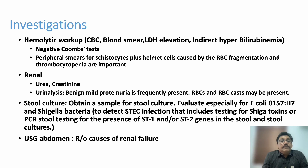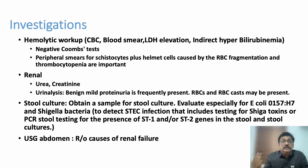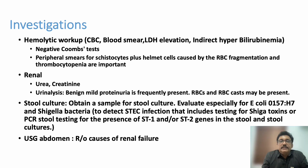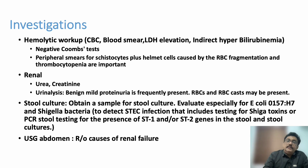Urea and creatinine can be elevated in patients with renal involvement. Urine analysis shows proteinuria, RBCs, and RBC casts. Stool culture should be done to evaluate for E. coli O157:H7 or other bacteria, with PCR testing or culture to confirm the diagnosis. Ultrasound of the abdomen can assess for pre-existing kidney disease, renal stones, or assess corticomedullary differentiation.